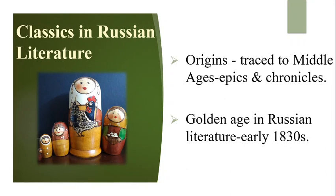We come to the topic in question: the classics in Russian literature. The origins of Russian literature can be traced to the Middle Ages, when epics and chronicles were composed. From the early 1830s onwards, the golden age in Russian literature began. Poetry, prose, and fiction flourished well during this golden age. Now let's take a look at the authors who produced classics in Russian literature.